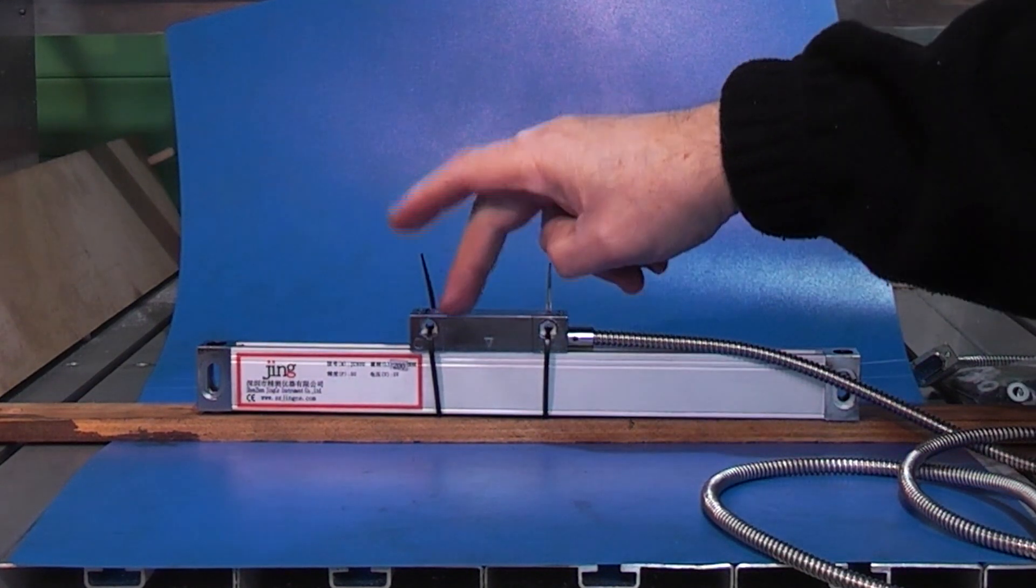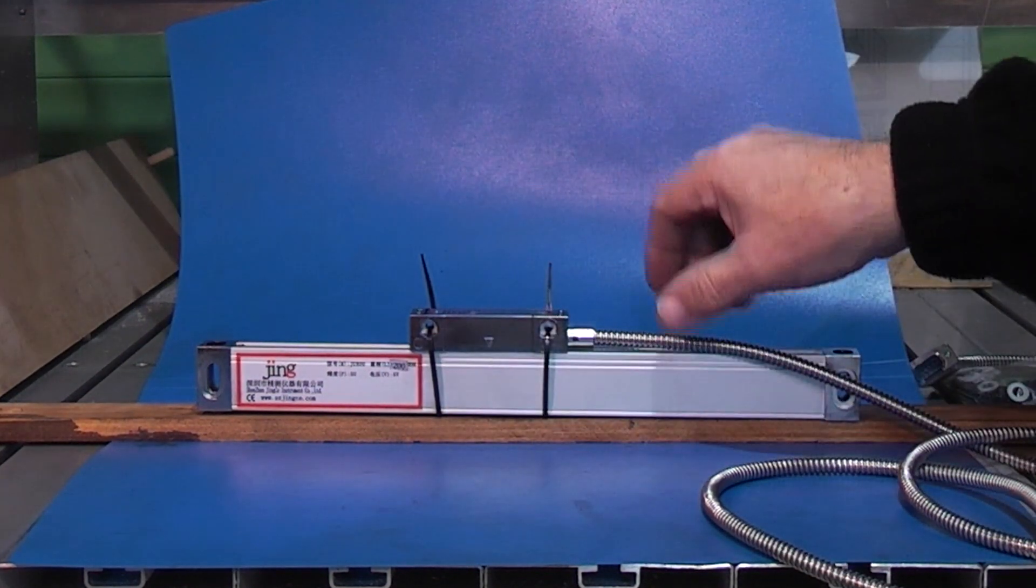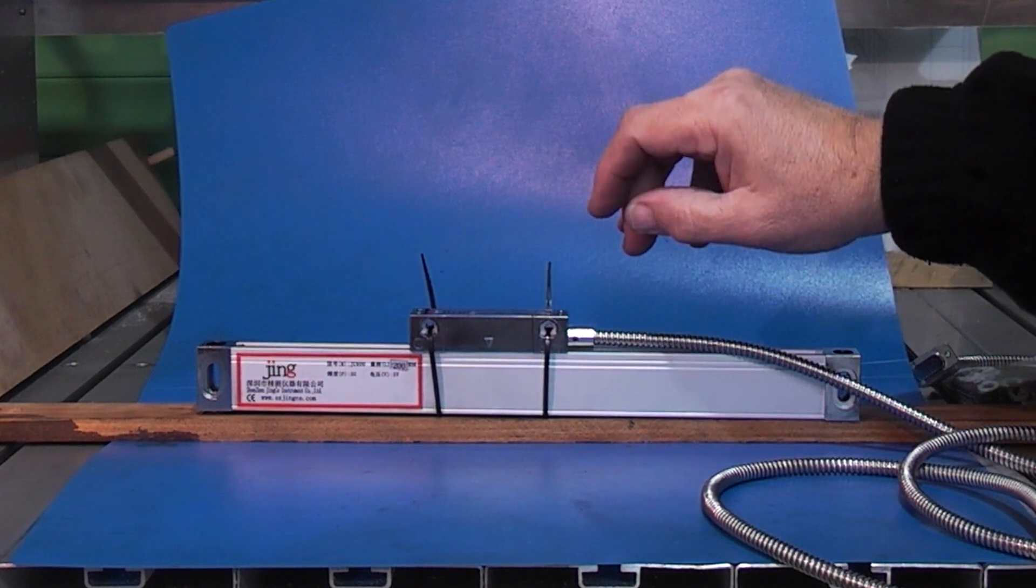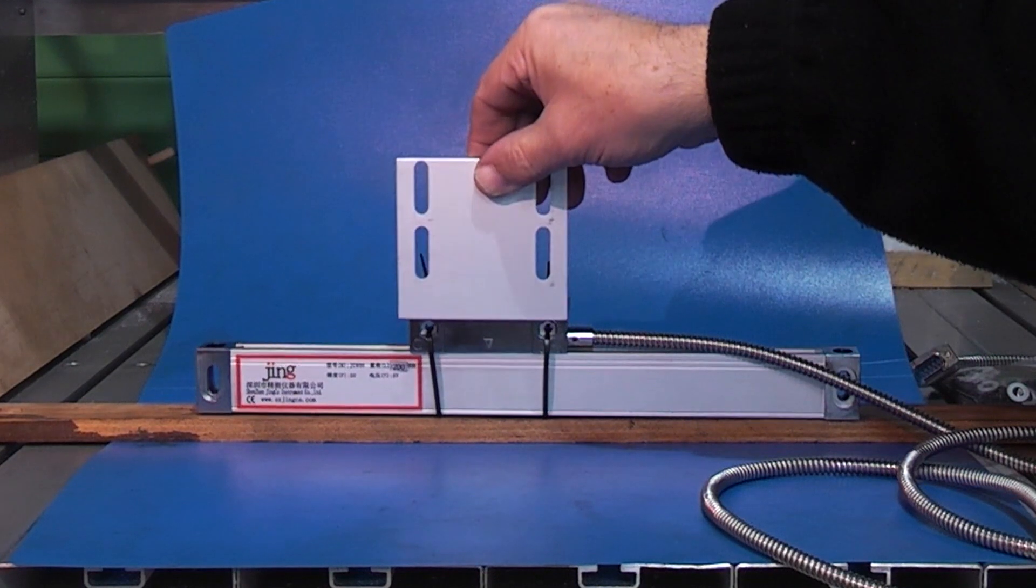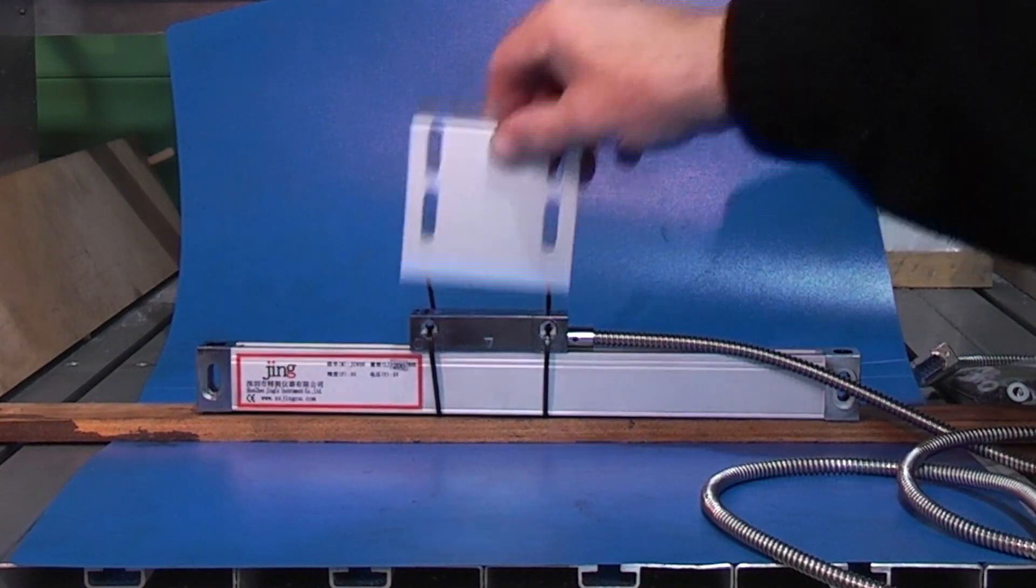And the reading head here which is held on temporarily with the cable ties, that fits to a bracket which is supplied with the part. Here's the bracket and that bolts onto your machine as well.